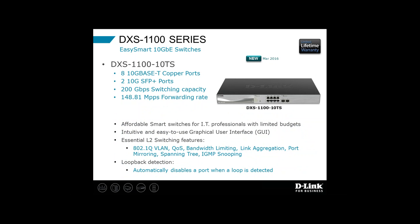We are announcing in Q1 of next year a new smart switch in our easy smart family — the DXS-1100 series. This is even lower-cost 10 gig switching with 10GBase-T; the first eight ports are 10 gig copper, and ports 9 and 10 are 10 gig SFP+. Not quite as sophisticated as the 1210s, but it still has the essential Layer 2 switching features like VLAN, QoS, and IGMP snooping. A very affordable 10 gig switch for business networks of all sizes — look for this coming in early Q1 of next year.